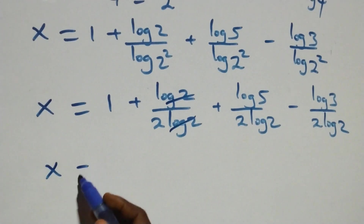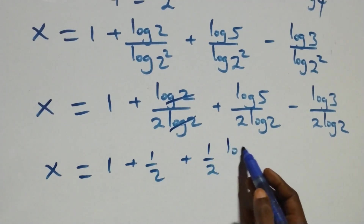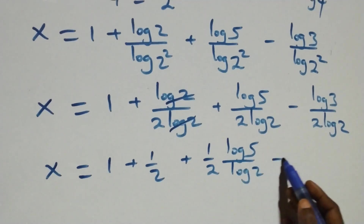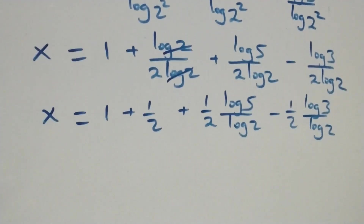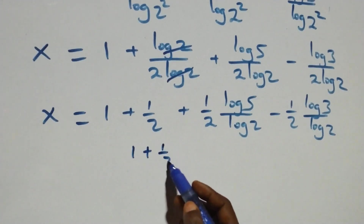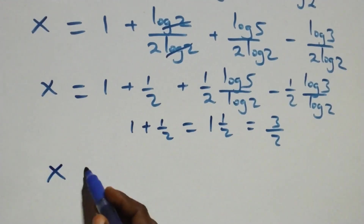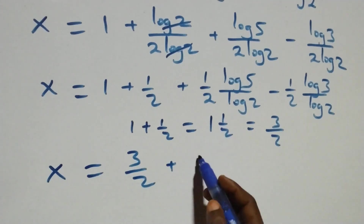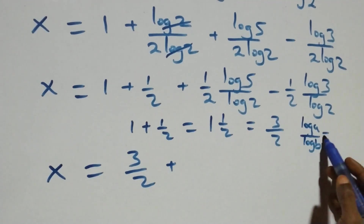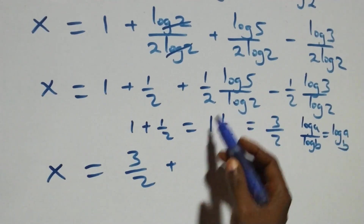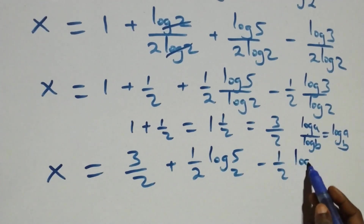Here log 2 over log 2 cancels to give 1 over 2, which implies x equals to 1 plus 1 over 2. We can also write the remaining terms as 1 over 2 times log 5 over log 2, then minus 1 over 2 times log 3 over log 2. Now, 1 plus 1 over 2 is 3 over 2. We apply the change of base formula where log a over log b equals log a to base b. So we have x equals to 3 over 2 plus 1 over 2 times log 5 base 2, minus 1 over 2 times log 3 base 2.